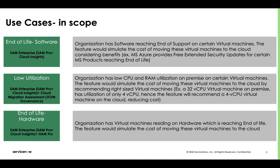The second use case is low utilization. Organizations have many on-premise virtual machines with low CPU and RAM utilization. This feature would simulate the cost of moving those virtual machines to the cloud and recommend right-sized virtual machines on these cloud providers. For example, if there's a 32 vCPU machine on-premise and its utilization is very low, it would probably recommend a 4 vCPU machine on the cloud, which would lead to more cost savings for the customer.